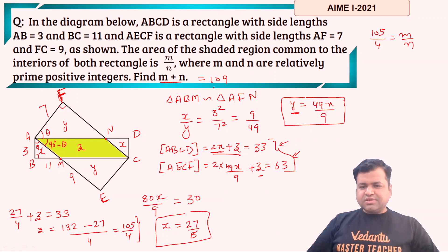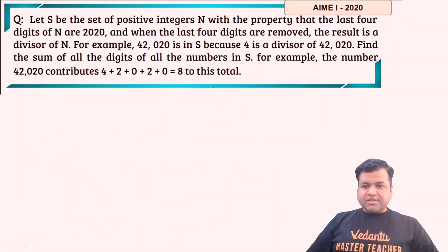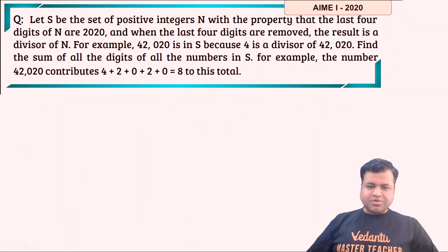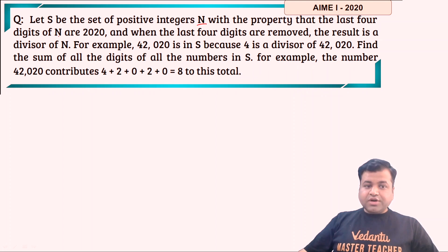So as you can see, this is a simple question. Let's proceed to the next question. This is a nice question from combinatorics with a little bit of number theory. The question says: let S be the set of positive integers n with the property that the last four digits of n are 2020.